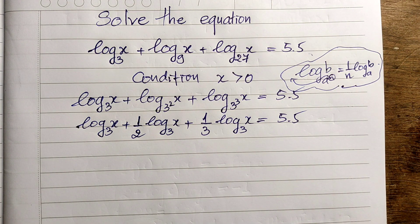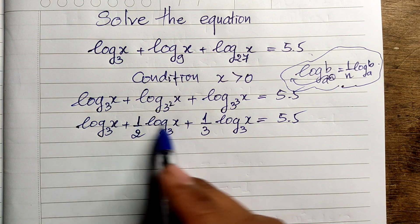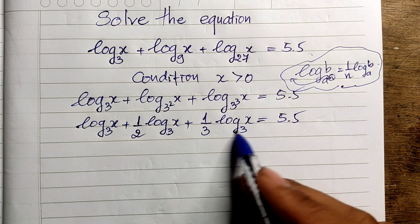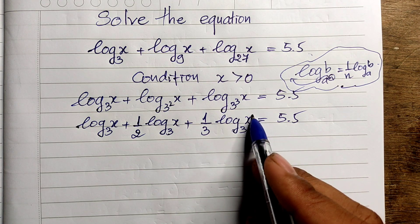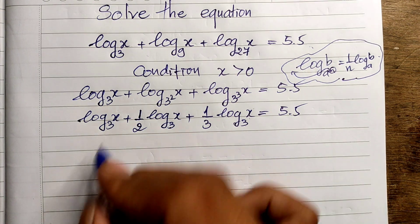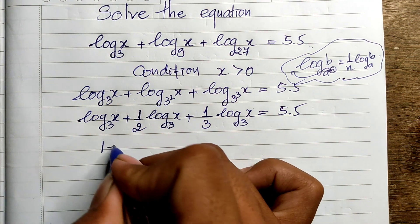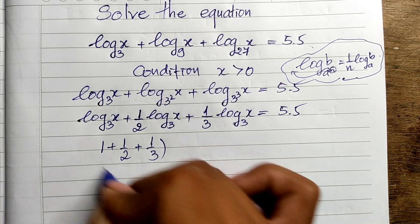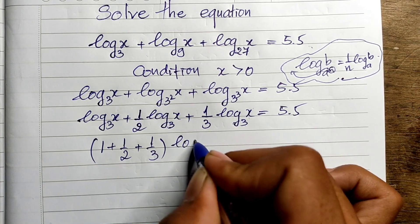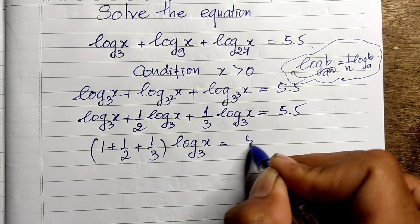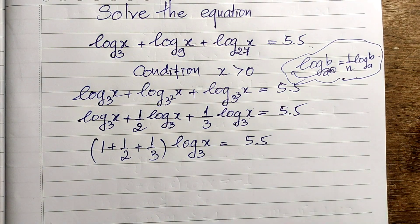We have log base 3 of x repeated with different coefficients. We factor it out, giving us the factor 1 plus one-half plus one-third, multiplied by log base 3 of x, equals 5.5.